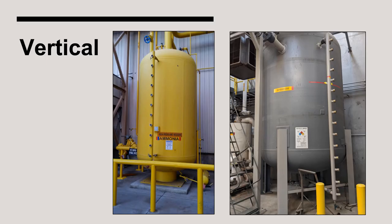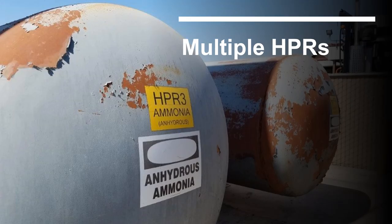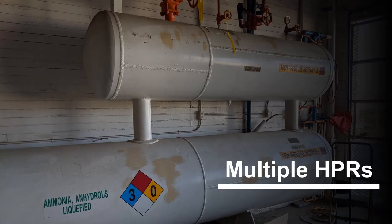High pressure receivers can also be vertically oriented. Vertical receivers offer the advantage of occupying less square footage, but a downside is that the valves on top of the vessel can be difficult to access. It is not uncommon for larger systems to have multiple high pressure receivers. When this is the case, the HPRs are typically interconnected so that they operate in concert with the same liquid level. The arrangement in this picture is quite unusual in that the two receivers are stacked on top of each other — a good reminder that no two systems are exactly the same.